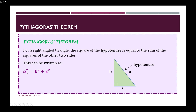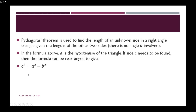So just looking back at that formula, this can be rearranged to give C squared equal to A squared minus B squared. And to find the value of C, we find the square root of that value.